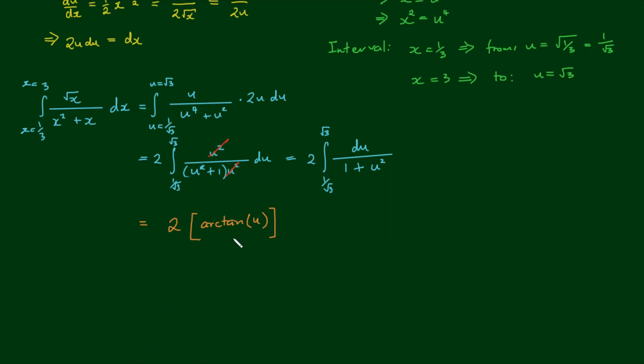So now we've got to evaluate the arc tangent of u between the bounds of root three and one on root three. And because we've already formulated the bounds for u, we don't have to back substitute for the x term again. We can if we want to, but that's an extra step. So we can simply evaluate this with respect to u because we've already worked out what the interval of u is.